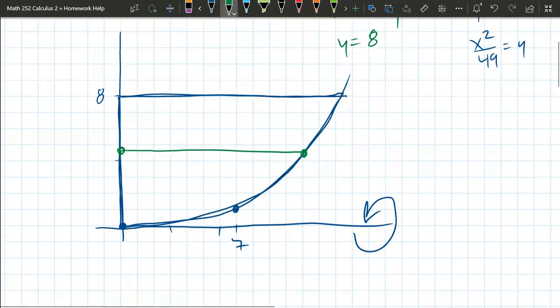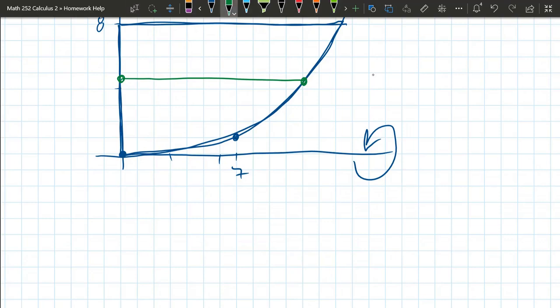Like this. I like to draw the rotated version of my cross section because it will be a cylinder. It's easy for me to see the radius and the height.